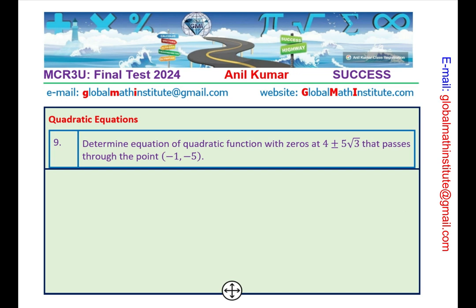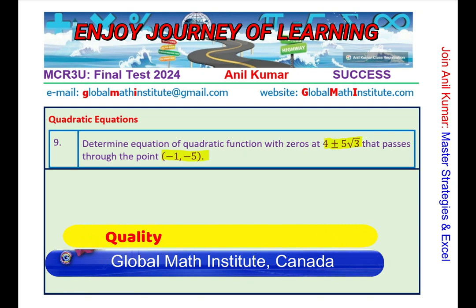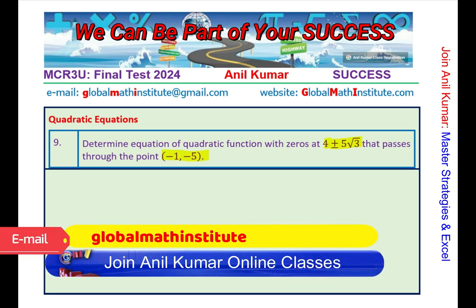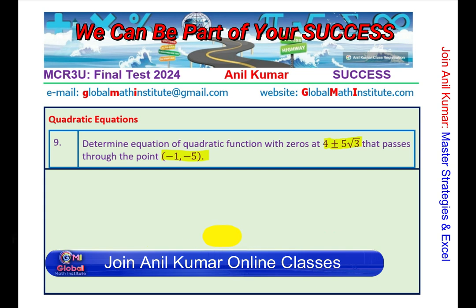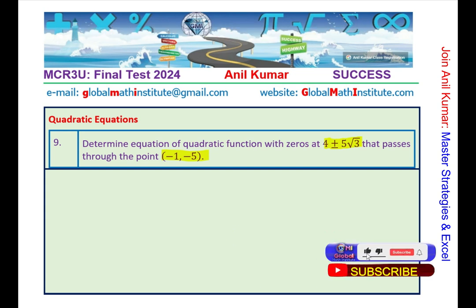Here is question 9. Determine the equation of a quadratic function with zeros at 4 ± 5√3 that passes through the point which is (-1, -5). We are given here irrational roots. Square root 3 is an irrational number. How do we write this kind of equation? Sometimes tricky. In our solutions, you'll find different approaches which can help you get this answer very easily. Search for Anil Kumar writing equation of quadratic function given irrational roots.